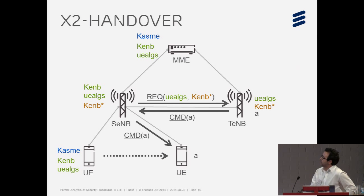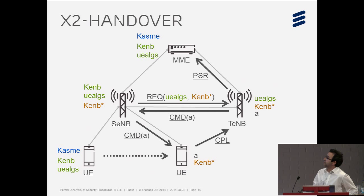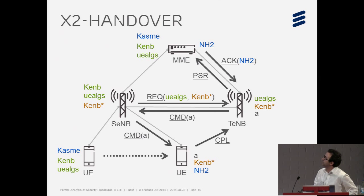The user equipment now knows which algorithm is supported by the target E-NodeB. It uses the same parameters to derive Key eNodeB star and sends a completion message to the target E-NodeB. The target E-NodeB then sends a path switch request message to the MME, notifying it that this E-NodeB is now serving the user equipment. Upon reception, the MME derives a key called Next Hop 2 and sends it in an acknowledgement to the target E-NodeB, to be used for deriving Key eNodeB stars for future handovers.